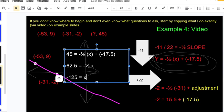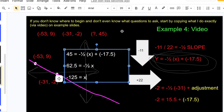Double-checking that in a calculator: negative one-half times negative one hundred twenty-five minus seventeen point five equals forty-five. Exactly what I'm looking for. Cool, nice and simple.